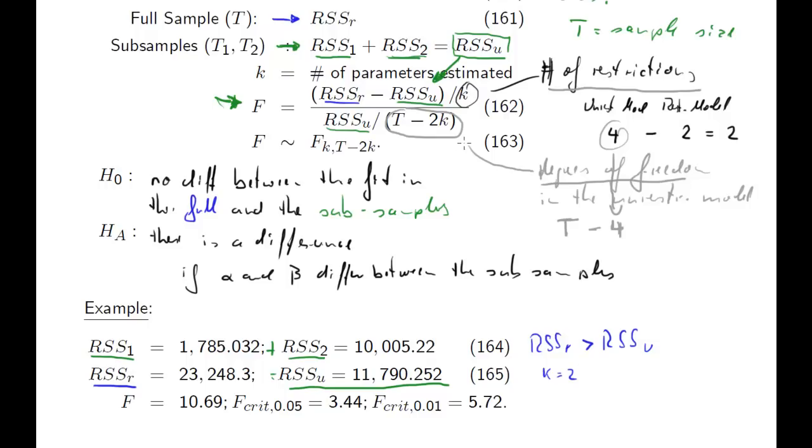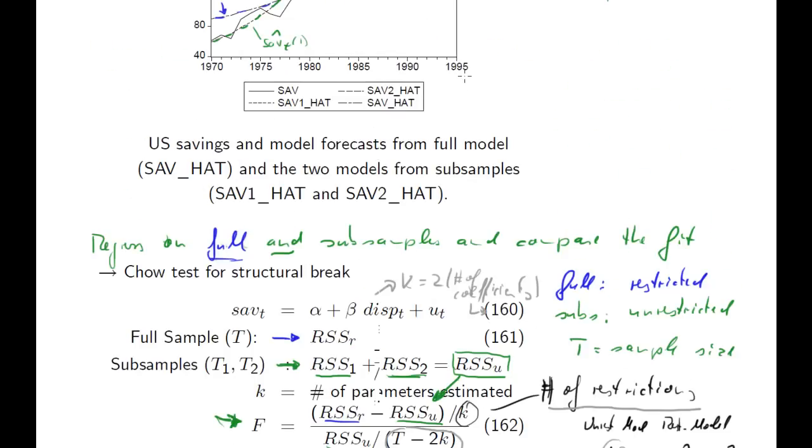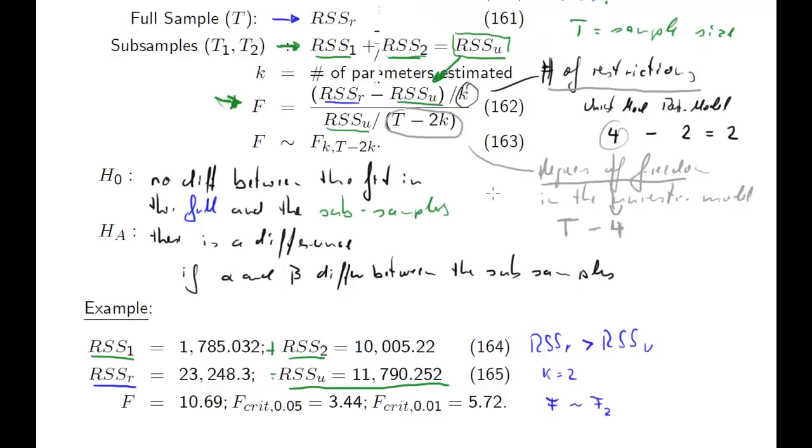Then we know that k equals 2. So we know our F test statistic is distributed as an F distribution with 2 and T minus 2k. How many years have we got? 70 to 95, that's 26 years. So T minus 4 is going to be 22. So that one here is going to be 26 minus 4, it's going to be 22. So this is where our critical value comes from. You can check that: 5.72.